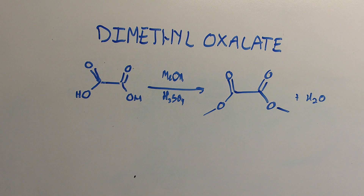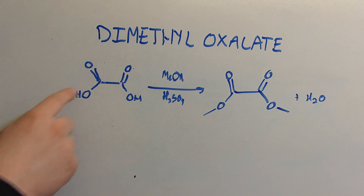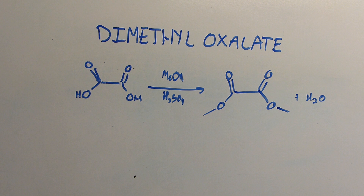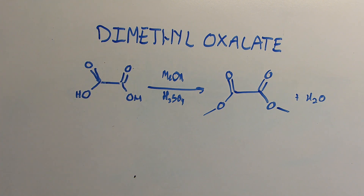Now oxalic acid is the simplest dicarboxylic acid, a carboxyl group here being this carbon with an oxygen and a hydroxyl group attached right here. This carboxyl group, when attached to anything, means that that thing is a carboxylic acid, and the simplest dicarboxylic acid, or the simplest molecule that has two carboxyl groups, is this right here, which is widely known as oxalic acid.